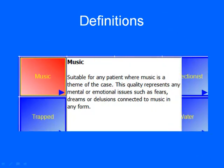Every one of the qualities also comes with a definition so you can understand exactly what the rubric is covering. For example, here is a definition of Music — suitable for any patient where music is a theme of the case. This quality represents any mental and emotional issues such as fears, delusions, desires, aversions, or dreams connected to music in any form. The rubrics concentrate on mental issues, so a physical aggravation from music may not be listed.